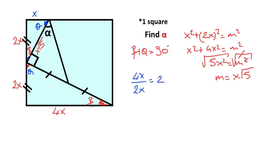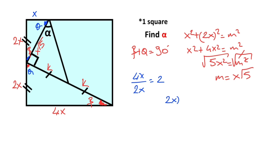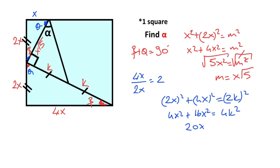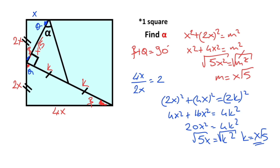Let's call this length k, so here is also k. For this triangle, if we apply the Pythagorean theorem: (2x) squared plus (4x) squared equals (2k) squared. So 4x squared plus 16x squared equals 4k squared, giving 20x squared equals 4k squared, therefore 5x squared equals k squared. Taking the square root of both sides, k equals x root 5.